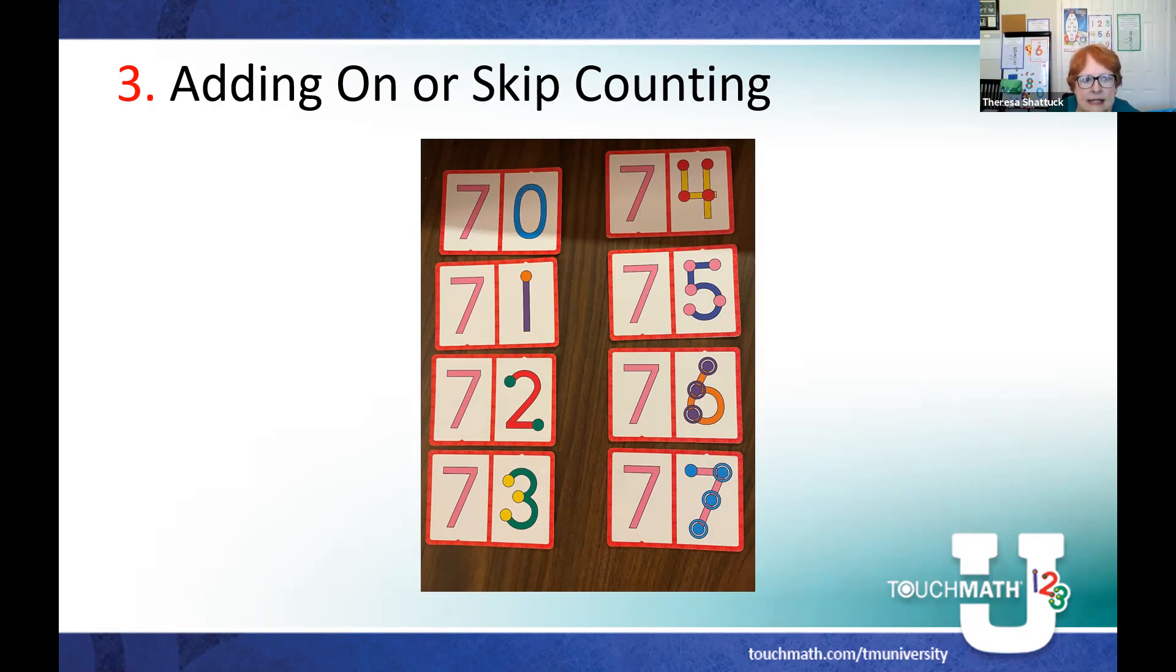Counting on means I would say seven and then count the touch point: seven, eight. So seven plus one is eight. Seven plus two is seven, eight, nine. Every time I look at my touch points, I'm just counting. So seven plus three is seven, eight, nine, ten.